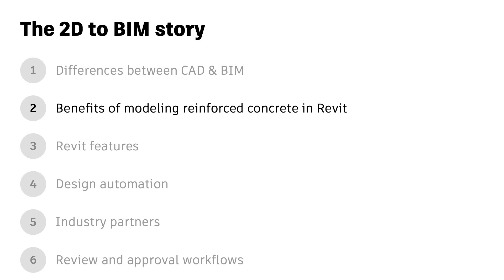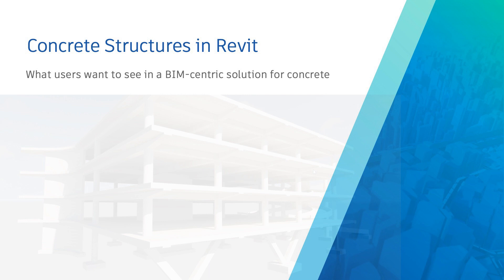Be sure to check out all the videos in this series. Building information modeling — BIM — is a critical part of how structural systems are designed and built today. But the reinforced concrete industry has been lagging behind structural steel when it comes to its adoption of BIM. This is due to the highly fragmented nature of its supply chain, which requires a number of different designers and suppliers to collaborate and simultaneously deliver the final product.